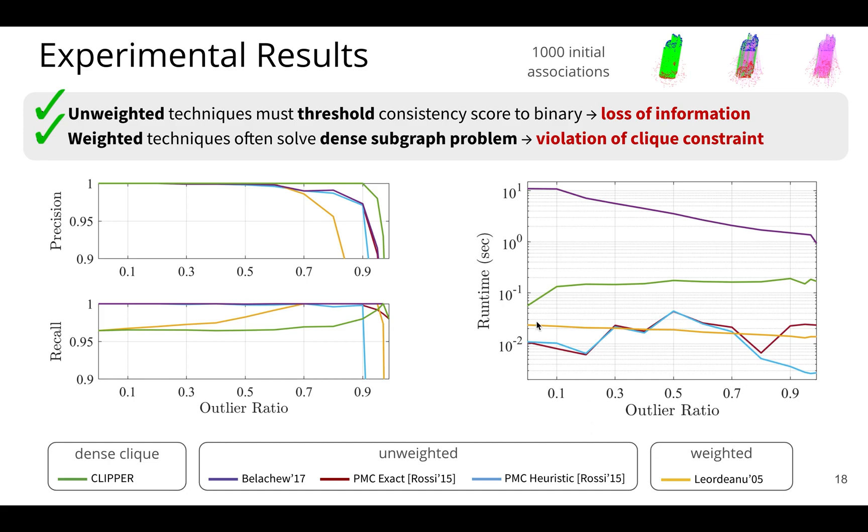The next point is showing how these weighted algorithms violate the clique constraint. And so we are using here Leordeanu as a representative of this class. And this Leordeanu algorithm uses some spectral relaxations and effectively throws away the clique constraint. And we see that it really starts to struggle rather quickly in these higher outlier regime cases. So Clipper is able to maintain high precision over the competing algorithms by maintaining information and by also maintaining this clique constraint.